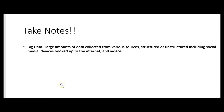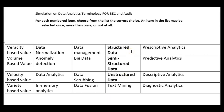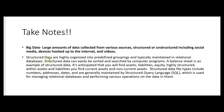You should probably take some notes here as we go over these terms. Big data includes large amounts of data collected from various sources including social media, devices hooked up to the internet, and videos. This data could be structured or unstructured. Structured data is highly organized into predefined groupings and typically maintained in relational databases. Structured data can easily be sorted and searched by computer programs. A balance sheet is an example of structured data.